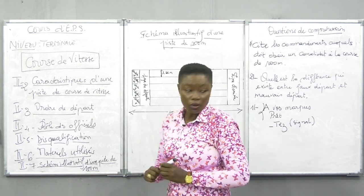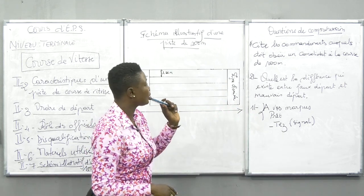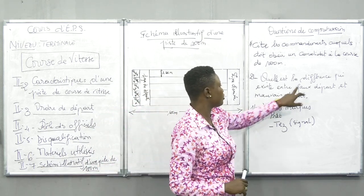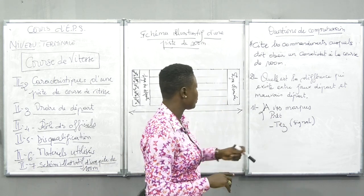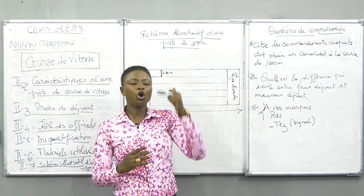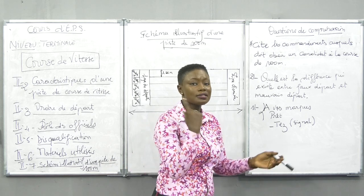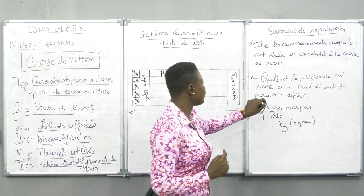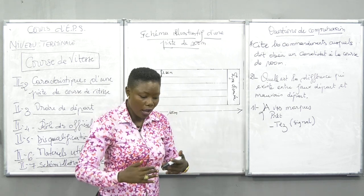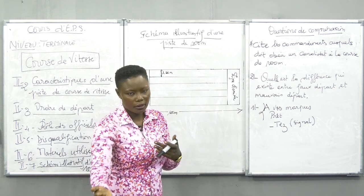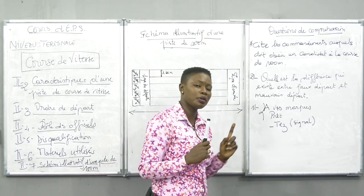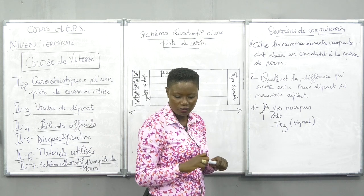La deuxième question: quelle est la différence entre le faux départ et le mauvais départ? Le faux départ, c'est quand le starter n'a pas encore donné son signal et que l'élève parte. Mais le mauvais départ, c'est quand le starter a déjà donné le départ et que le candidat est parti bien après le signal du starter. Voilà la différence — faites la nuance et faites très attention.